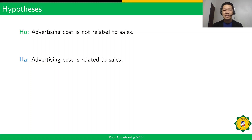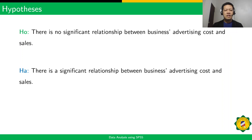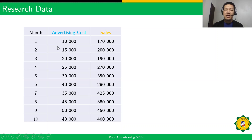For the alternative hypothesis: advertising cost is related to sales. The statement of the problem is: is there a significant relationship between business advertising cost and sales? The null hypothesis states there is no significant relationship, while the alternative states there is a significant relationship. For the period of 10 months, we have the advertising cost and corresponding sales — for example, in the first month, advertising cost is 10,000 pesos and sales is 170,000 pesos. We are going to treat this data using Pearson R in SPSS.